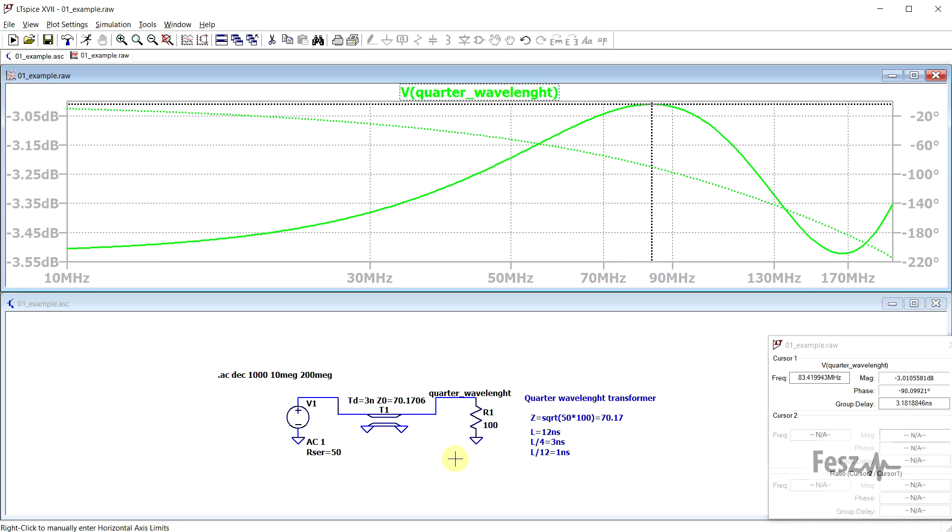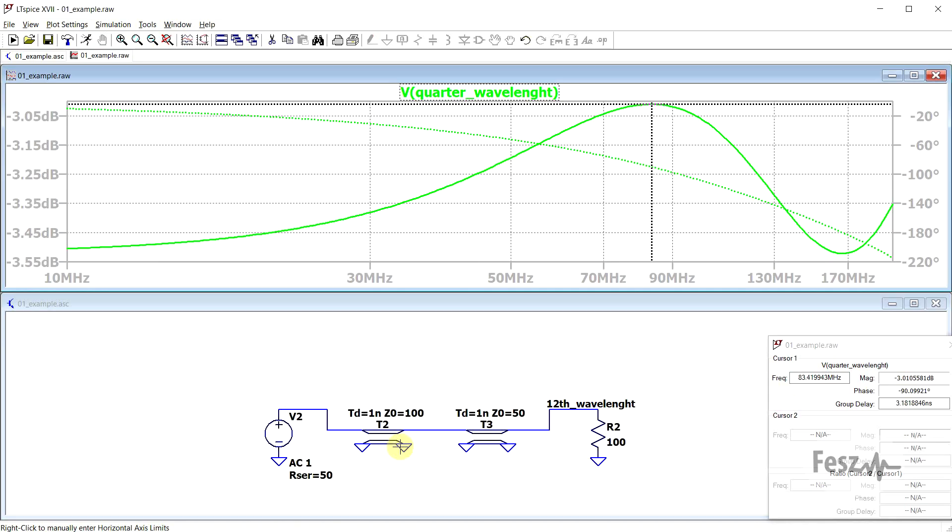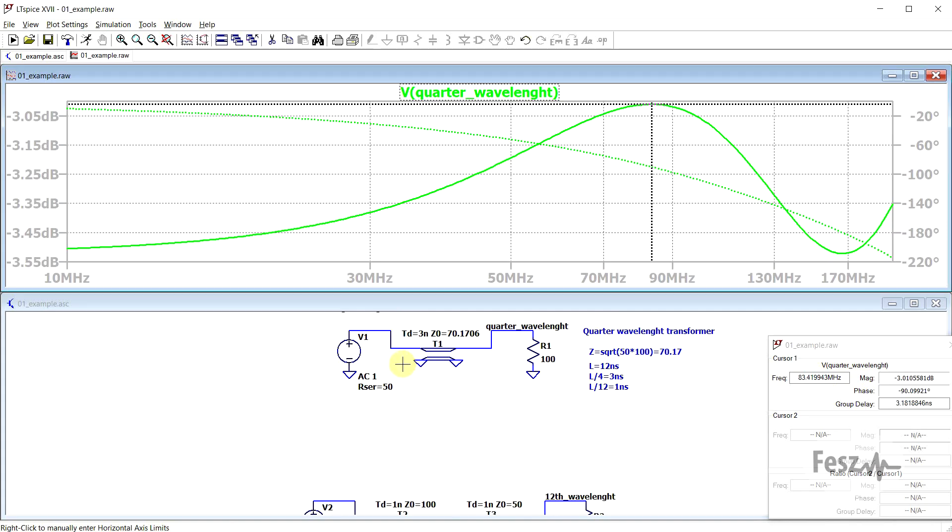If we look at the twelfth wavelength transformer, for this I used two different sections, each one nanosecond long, and the characteristic impedances are the end impedances. So the first section is 100 ohms, the second section is 50 ohms. It should already be clear that, other than using more easily available impedances, you already have the external ones, this sort of transformer is smaller. We have a total electrical length of two nanoseconds instead of the previous three nanoseconds.